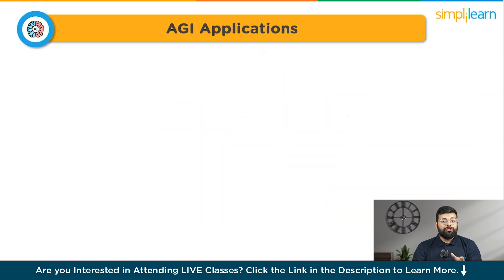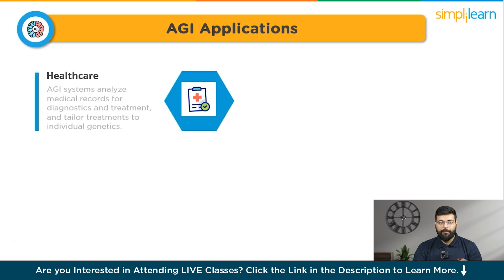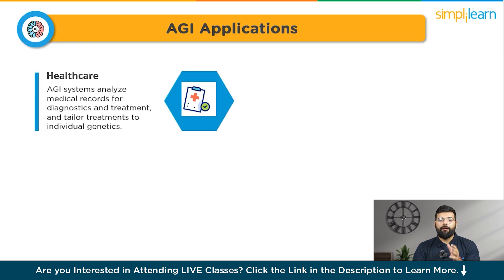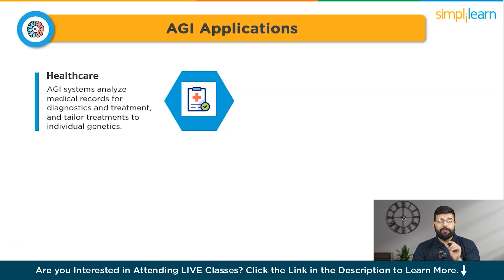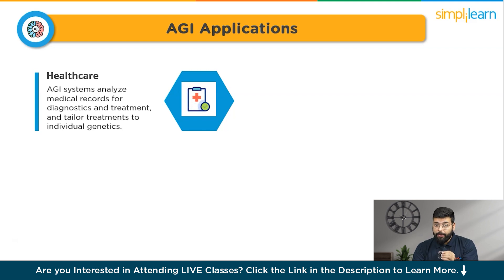Now let's look at the applications of artificial general intelligence. In healthcare, AGI systems can analyze vast medical records for diagnostics, treatment planning, and drug discovery. They also enable personalized medicine by tailoring treatments based on an individual's genetic makeup and medical history.